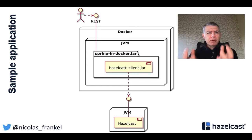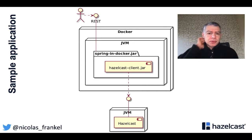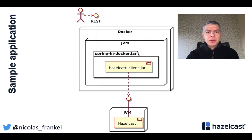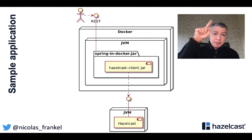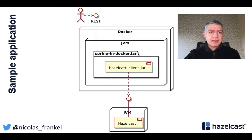Because we have several layers. The first one is actually the JAR, which might contain all the JARs depending on how you want to run it. Here I'm using Hazelcast as a dependency. Then you have your JVM, and then you have Docker. In my sample app, I have a REST endpoint that I want to expose to the outside world so I can put and get data in Hazelcast.